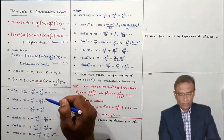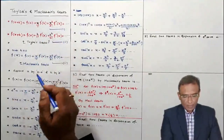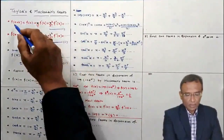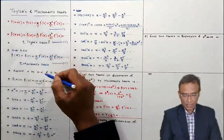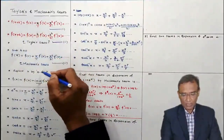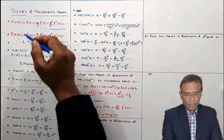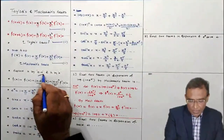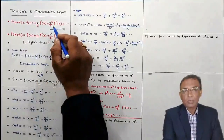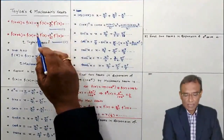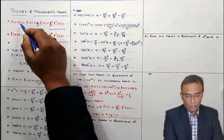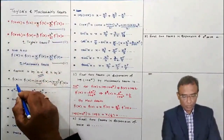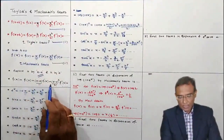One more Taylor series I am going to write — again a special case. In series 1, replace x by (x−a) and replace h by a. Then f(x+h) becomes f(x) because x minus a plus a gives only x. This is the Taylor series in ascending powers of (x−a), that is, in ascending powers of this linear factor. In these cases we have f(x) on the left-hand side, expressed in ascending powers of (x−a).